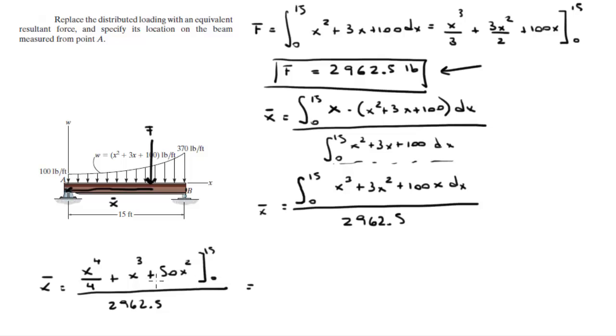When you plug in 15 and 0 at the top integral, you get 27,281.25 over 2,962.5. And that is equal to 9.21 feet.